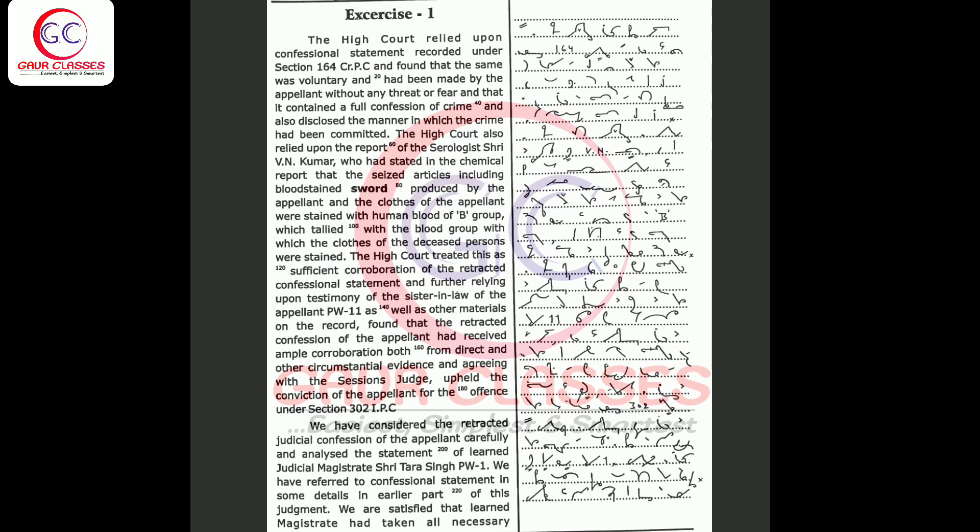He had stated in the chemical report that the seized articles including blood-stained sword produced by the appellant and the cloths of the appellant were stained with human blood of B group which tallied with the blood group of the deceased persons.